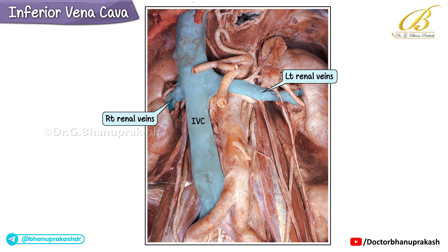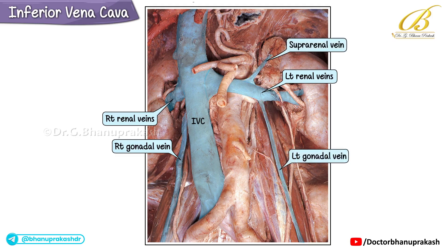On the right side, the gonadal vein drains directly into the inferior vena cava, whereas on the left side, the gonadal vein and the left suprarenal vein first join the left renal vein. The hepatic veins enter the superior part of the inferior vena cava.